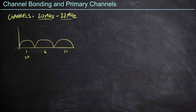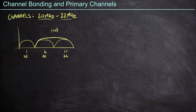Each one of these channels - we call them 20, but we know they're 22 megahertz in size. If I combine two of them together into what we'd consider a 40 megahertz channel, I combine channels 6 and 11, and basically we're using all of the OFDM subcarriers between those two channels. We have this very large 40 megahertz channel that's able to now carry more data.